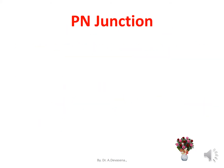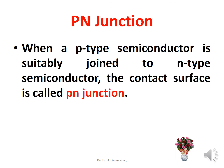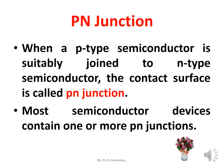So far we have discussed about P-type semiconductor and N-type semiconductor. Let us discuss about the P-N junction. When a P-type semiconductor is suitably joined to an N-type semiconductor, the contact surface is called a P-N junction. Most semiconductor devices contain one or more P-N junctions.